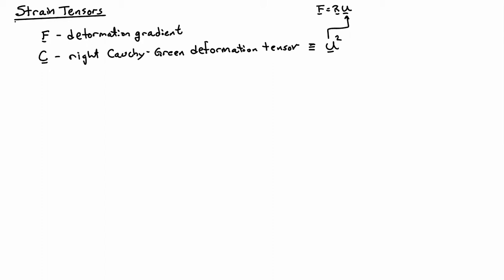Everything is built off C in our final relationships. And one of the things is that when there is no deformation, F is equal to C is equal to U is equal to the identity.